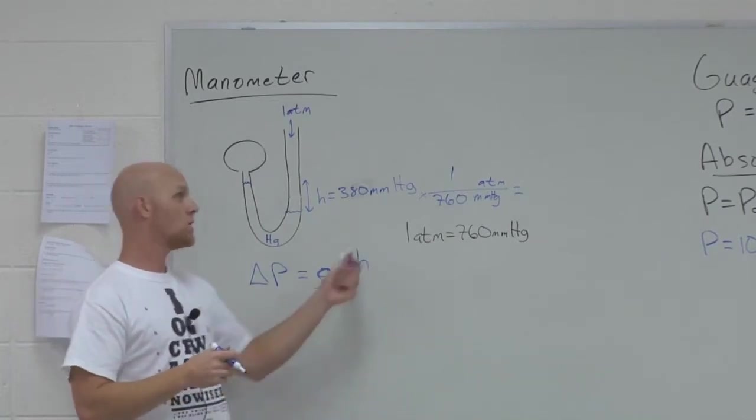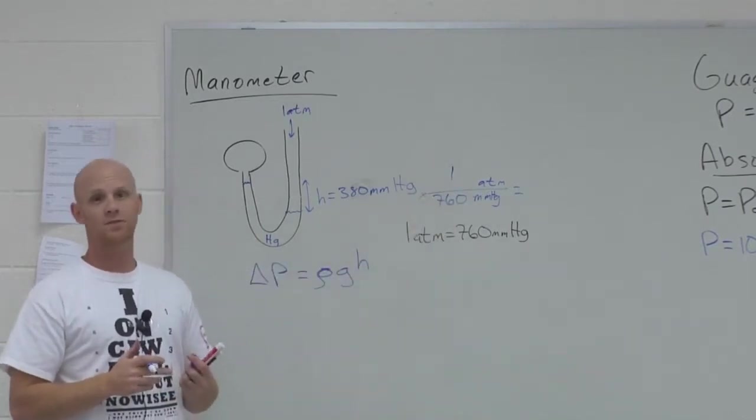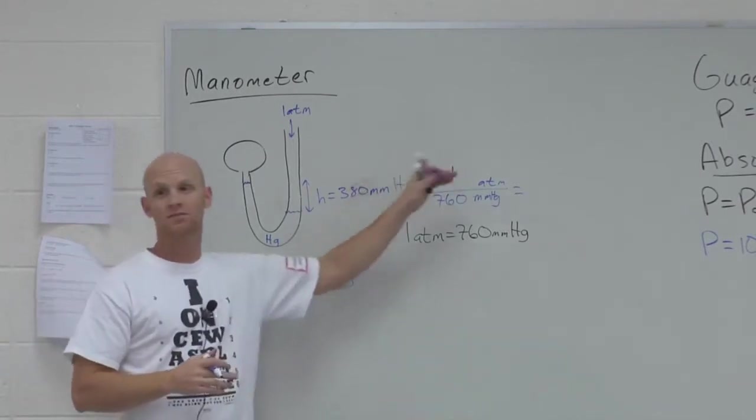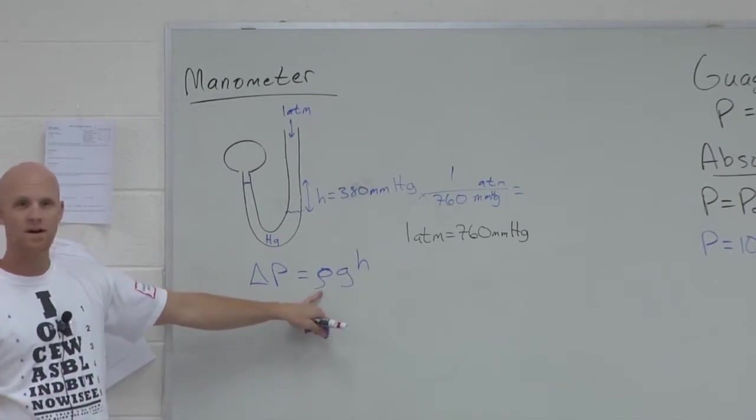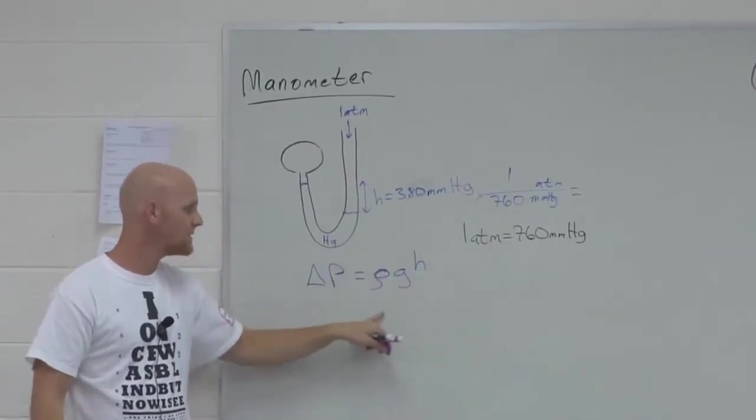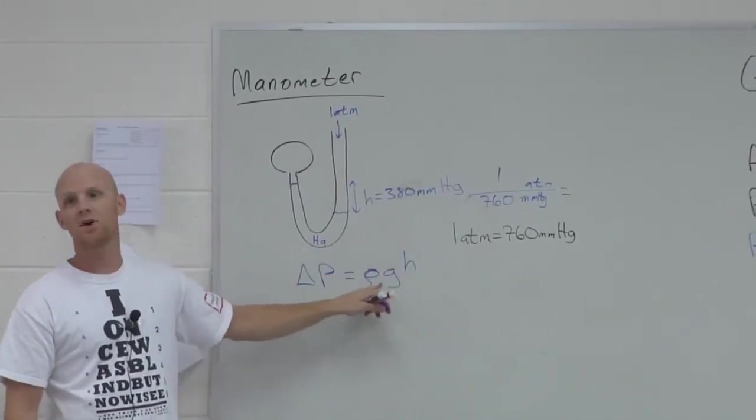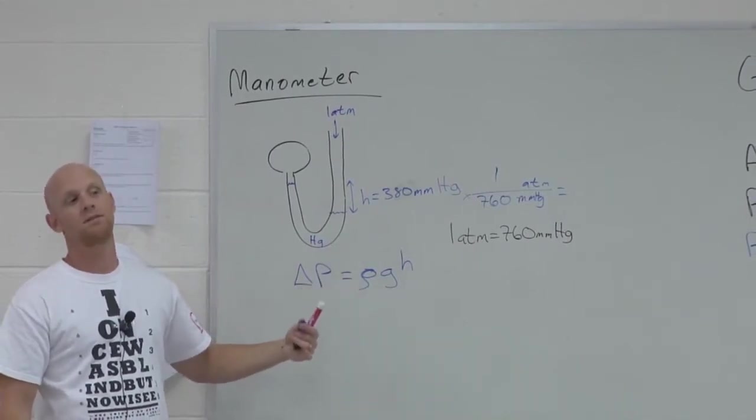And then I could say, oh, well, you know, one atmosphere equals 101,325 Pascal, if I wanted to go to Pascal, and stuff like that. Notice, if I use this equation, if the density of mercury had been provided, assuming you use SI units all the way across here, this would immediately already come out in Pascal.